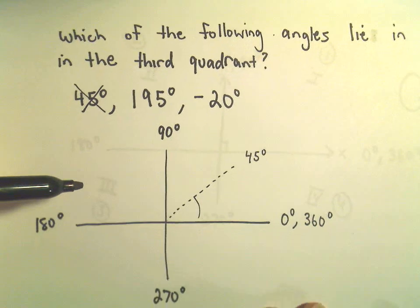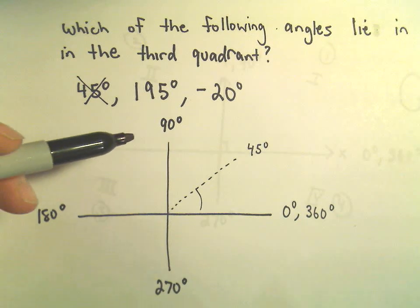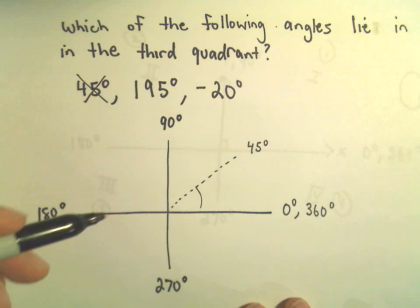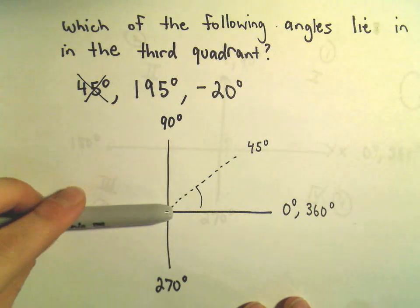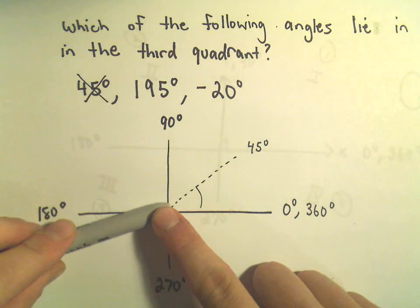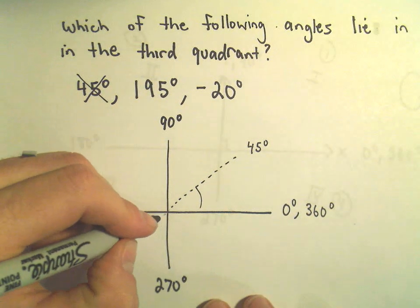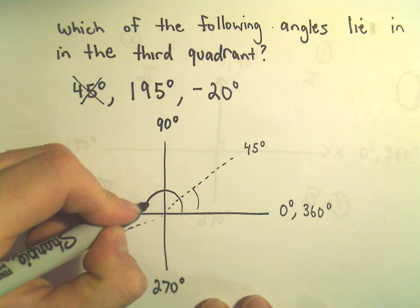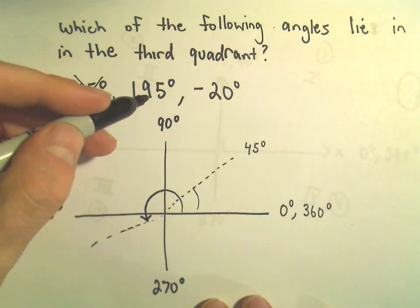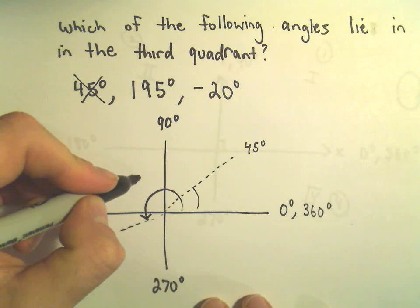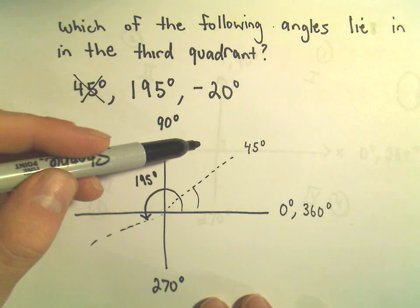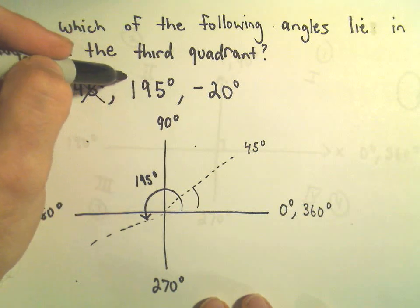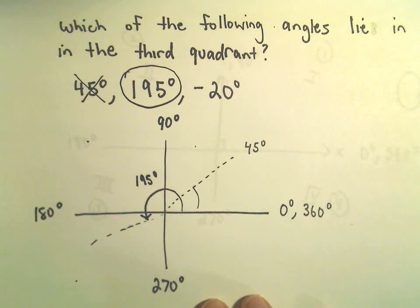195 degrees — if we've gone halfway around, we know we're at 180 degrees, but then we go another 15 degrees. So if we're at 180 and go just a few more degrees, somewhere down here, this would make the angle 195 degrees. Certainly that's going to put us in the third quadrant. So 195 is our answer.